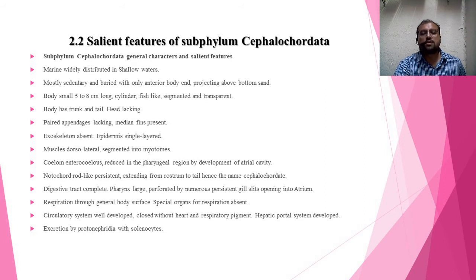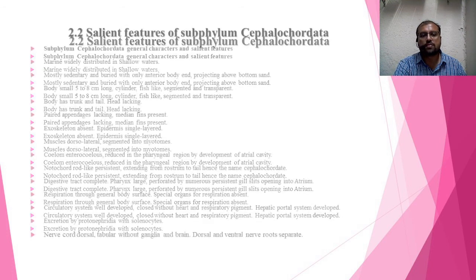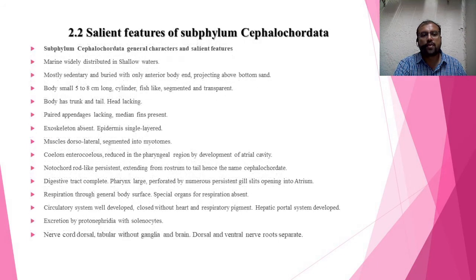The removal of nitrogenous waste is carried out by protonephridia with solenocytes — these are primitive structures for excretion. The nerve cord is dorsal and tubular, without ganglia and without a brain. The dorsal and ventral nerve roots are separate.